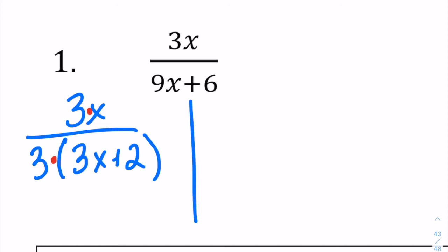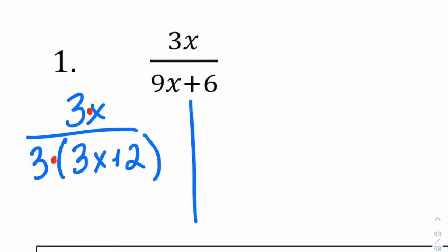I know students — it makes me cringe — they look at this and they think, 'I'll cancel the x's, I'll make that 1, I'll make that 3.' No, don't do it. You can only cancel when you've got multiplication. I know there's a plus sign here, but it's trapped inside those parentheses. So now we've got multiplication, and we can cancel out those 3s. That leaves us with x over (3x plus 2).